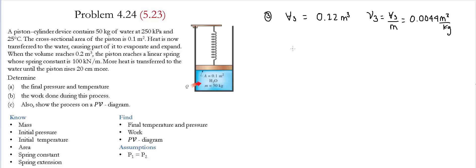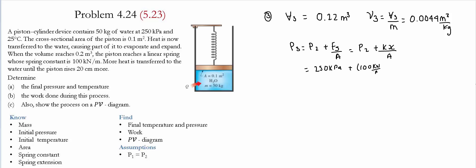To find the pressure at state 3, we use the summation of forces: P3 equals the pressure at state 2 plus the spring force divided by the area, which is P2 plus the spring constant times displacement divided by area. Substituting values: 250 kilopascals plus 100 kilonewtons per meter times 0.2 meters divided by 0.1 meter squared gives a final pressure of 450 kilopascals.